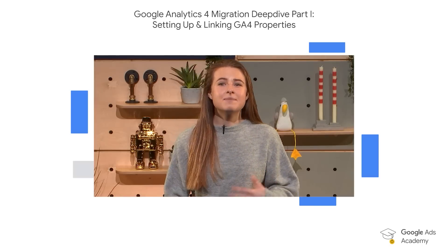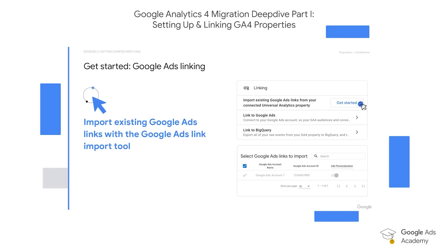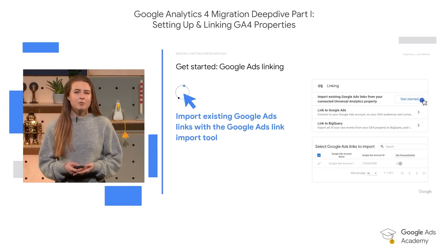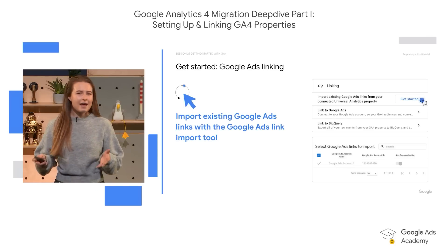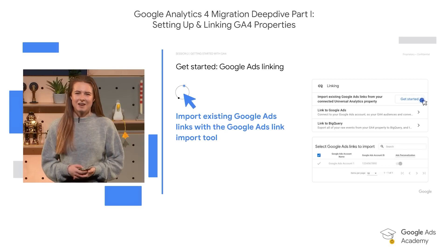The Google Ads link import tool can be used to copy over the links between Google Ads and Universal Analytics to your new Google Analytics 4 property. You can access the Google Ads linking tool via Admin, Setup Assistant, Linking, and Get Started. After linking a GA4 property to your Google Ads, conversions can be exported for usage within Google Ads once you've created them. Audiences are actually immediately available within Google Ads after creation without having to be exported separately.